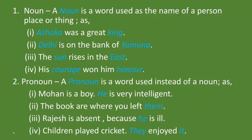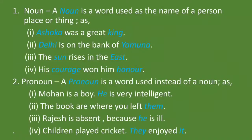दूसरा उदाहरण: The books are where you left them. यहाँ them का प्रयोग books के लिए किया गया है, इसलिए them pronoun है. तीसरा: Rajesh is absent because he is ill. यहाँ he का प्रयोग Rajesh के लिए किया गया है, इसलिए he pronoun है. चौथा: Children played cricket. They enjoyed it. यहाँ they और it दोनों ही pronoun हैं, क्योंकि they का प्रयोग Children के लिए और it का प्रयोग Cricket के लिए हुआ है.